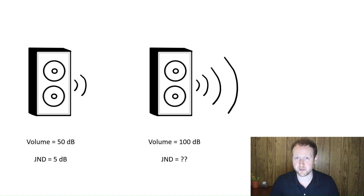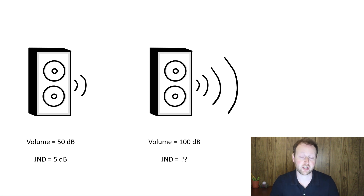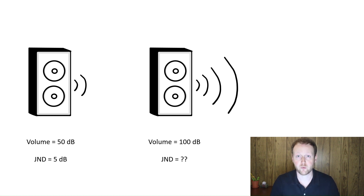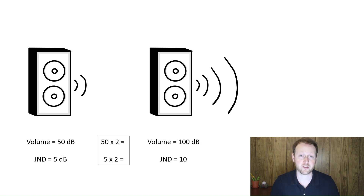If we wanted to run a follow-up experiment where we played participants a sound at 100 decibels, using Weber's Law we would actually be able to calculate or predict what the just noticeable difference was going to be. In the first experiment, the JND was 5 for an original volume of 50. In our second experiment, we've doubled that original volume from 50 to 100. Using Weber's Law, because we've doubled the stimulus intensity, we know the JND is also going to be doubled. So in the second experiment, the JND would be 10 — twice as much as 5.